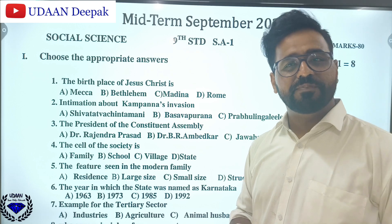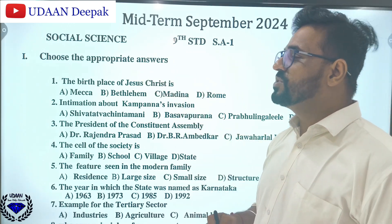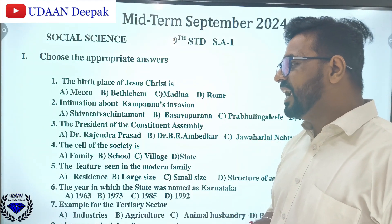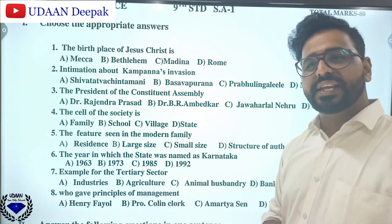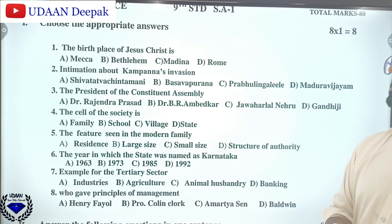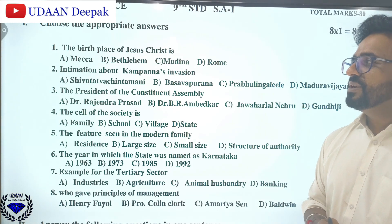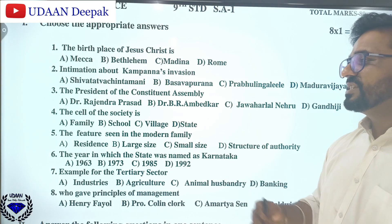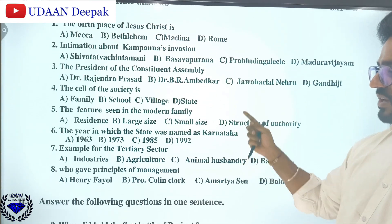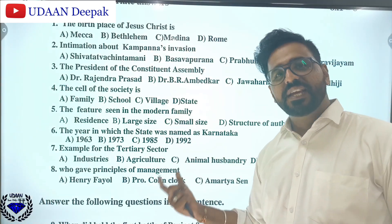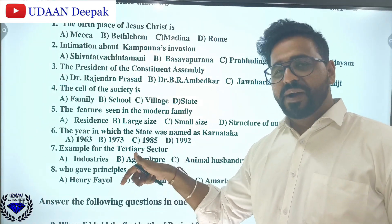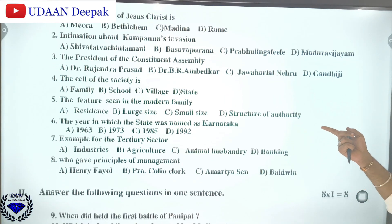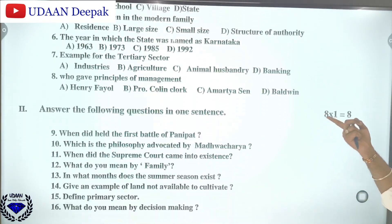Let us begin the discussion of the question paper. The objective type questions — that is, the truly appropriate answers section — will be having eight questions. You can find the eight questions here on the screen. The questions include one about Jesus Christ, one about Kampanna's invasion, President of Washington Assembly, and cell of the society. All these questions you can just go through; I will provide the answers subsequently in this video.